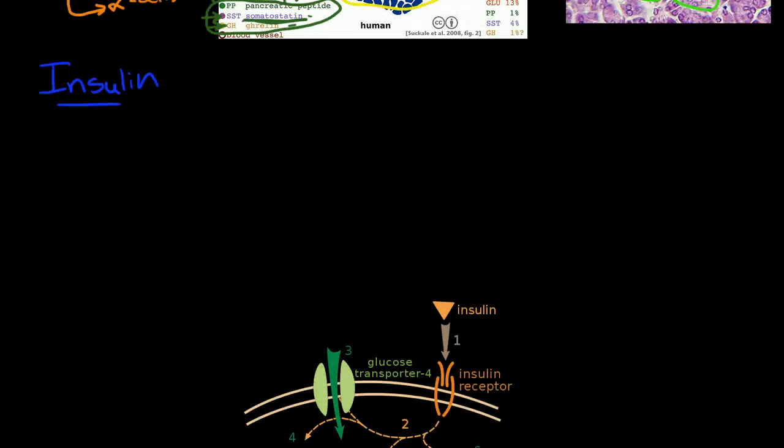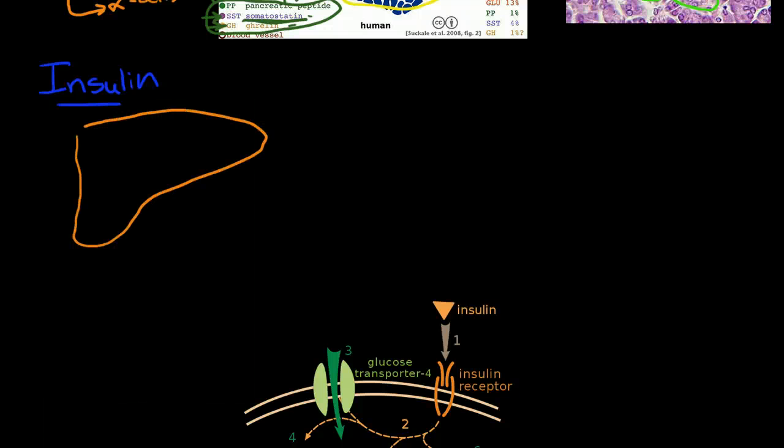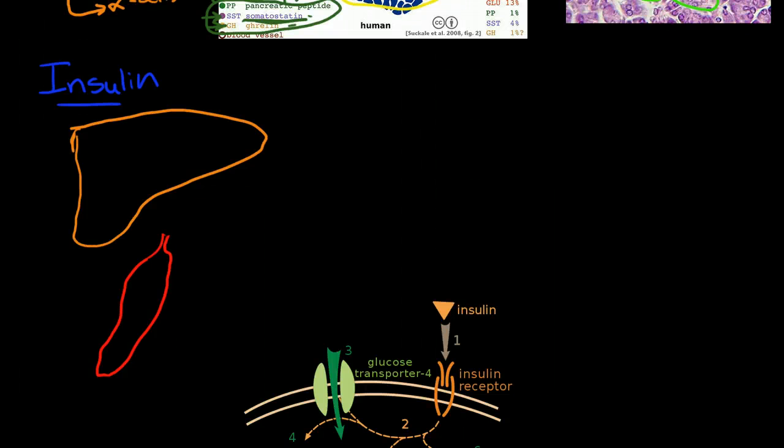Okay, so what does insulin do? Insulin has significant effects throughout the body, but it has very important effects in the liver and muscle cells. These are muscles and fat cells.